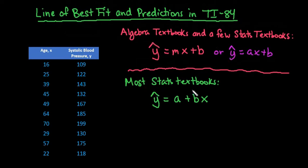Most stats textbooks write it where you have your y hat and a lot of times we'll name our variables, which I'll write that out after we get the answer, equals this is going to be our y intercept or our starting point, b is going to be our slope, and then x is going to be whatever our x explanatory variable is. So in this case our age is going to be our explanatory and our systolic blood pressure is going to be our response variable.